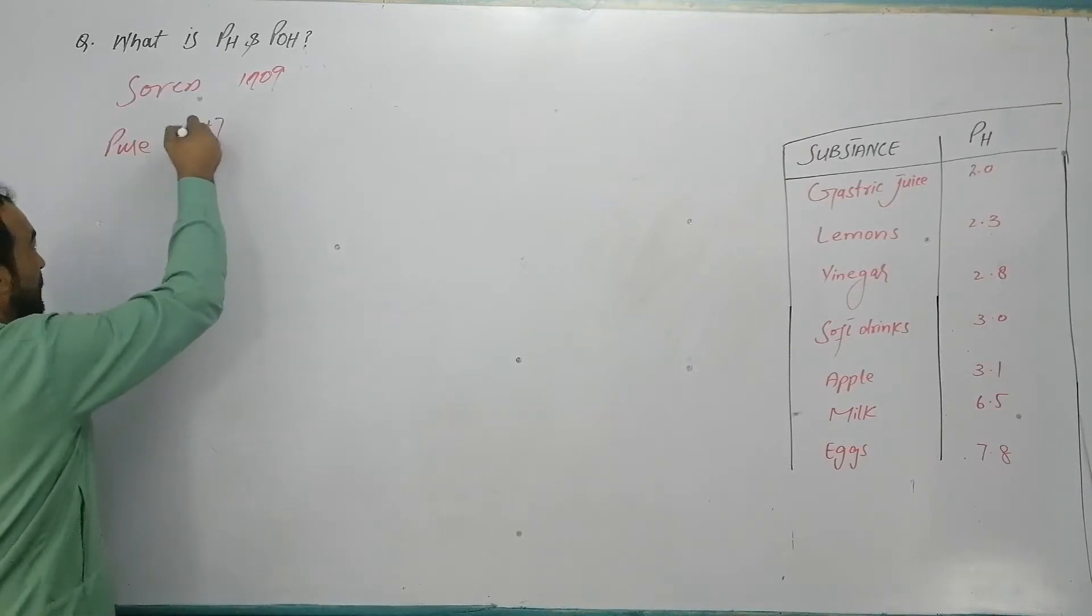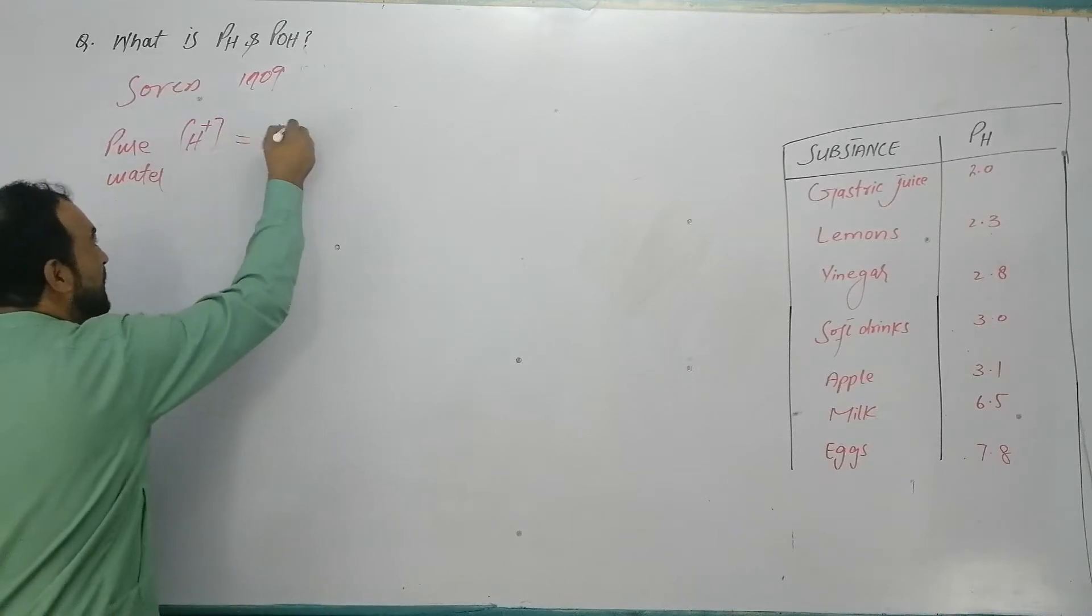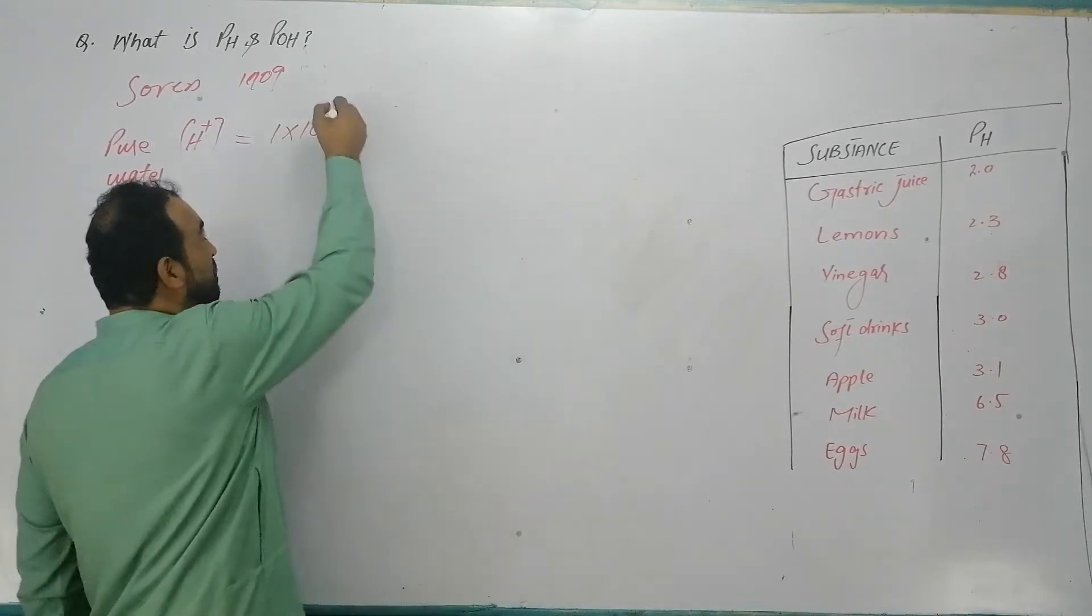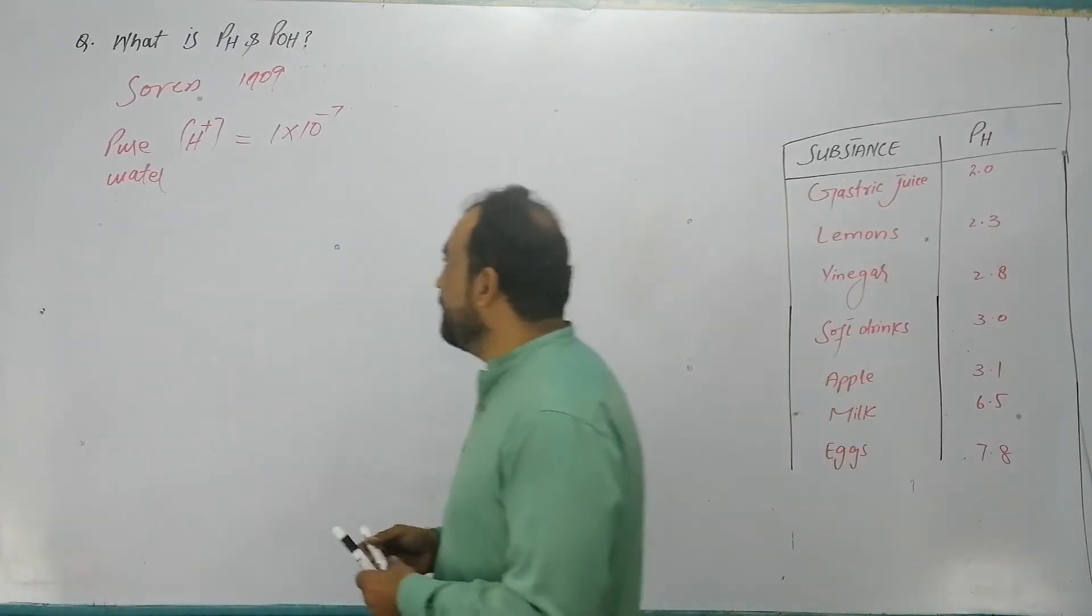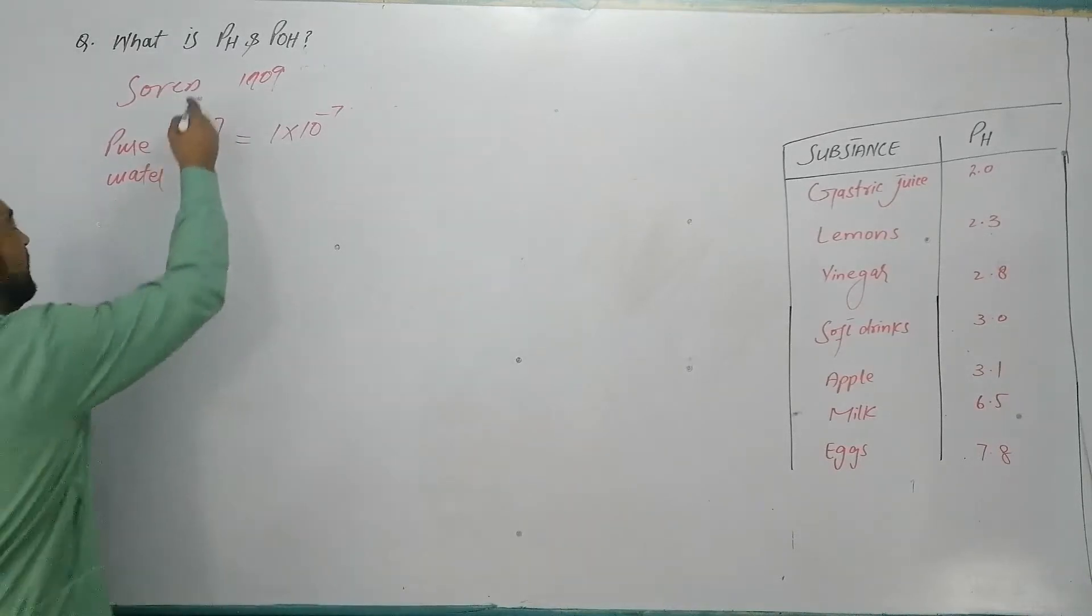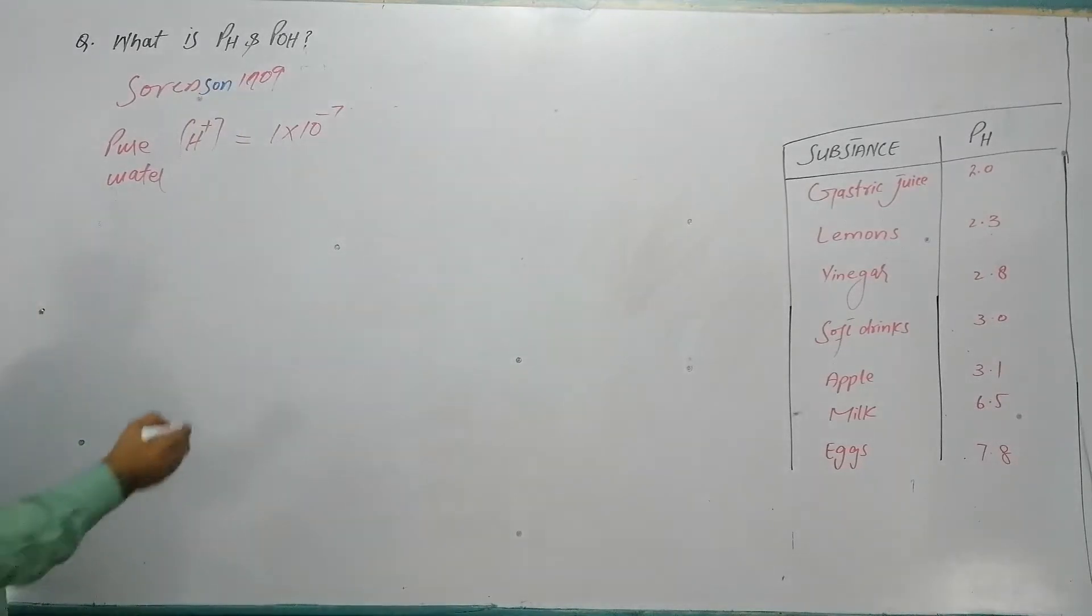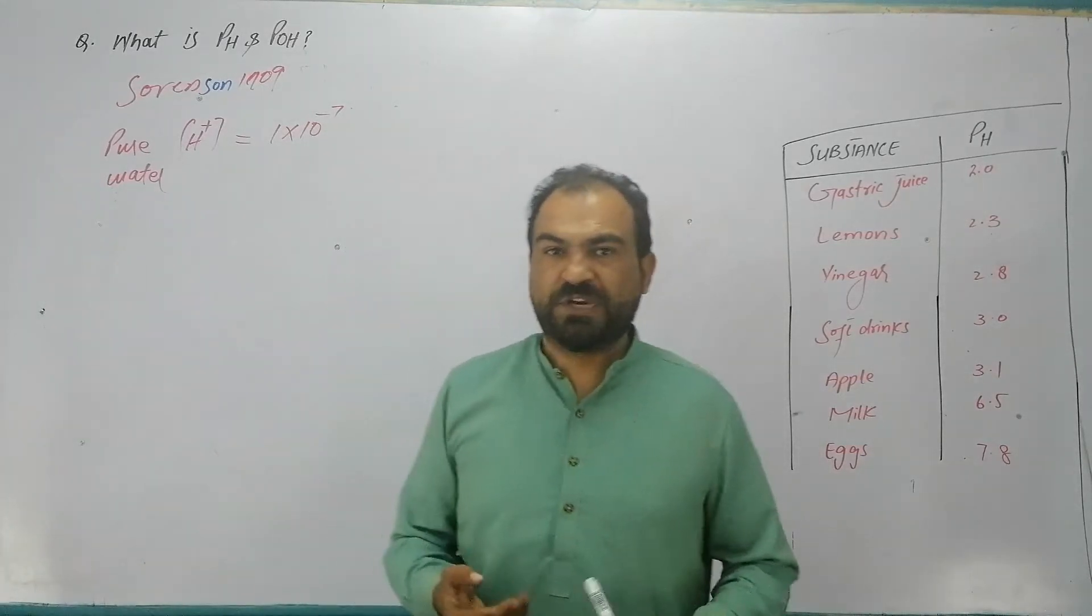For example, in pure water the concentration of H positive ions is equal to 1 into 10 raised to power minus 7. It is very small exponential form, so it is very difficult to deal with it. So Sorensen in 1909 converted this to whole numbers.